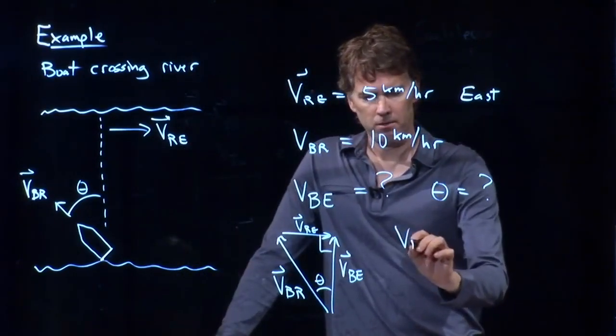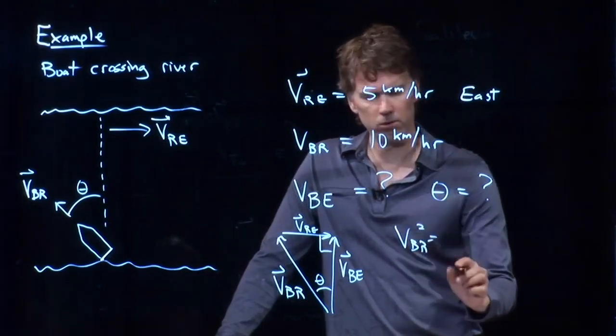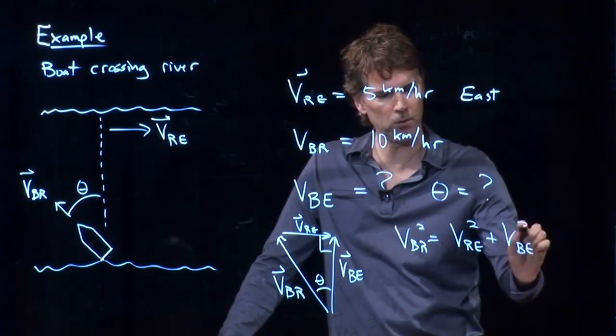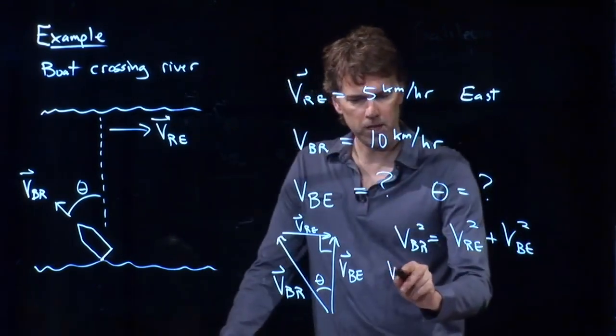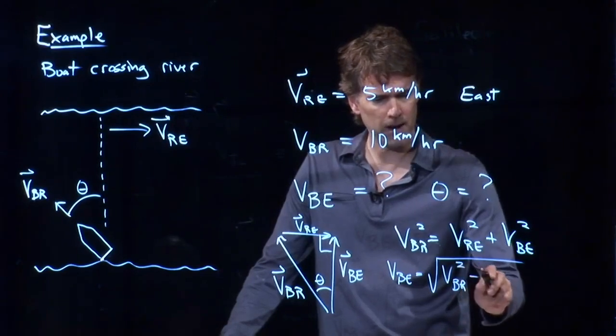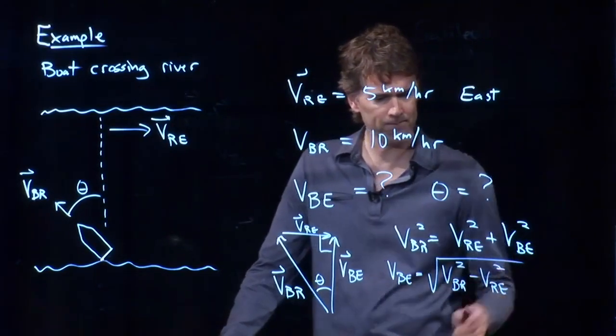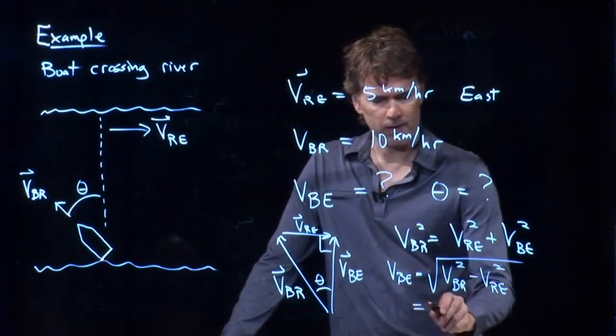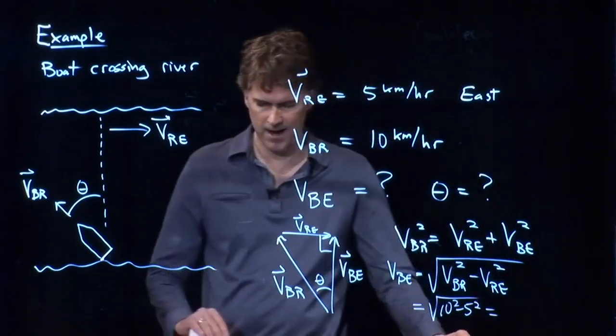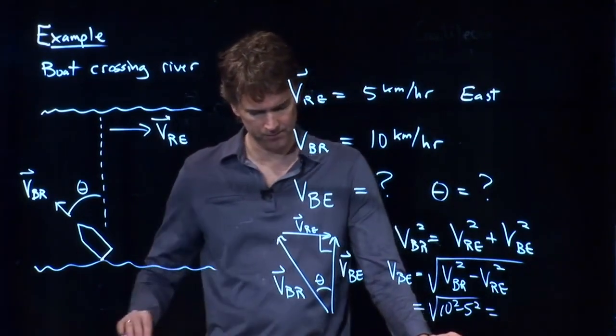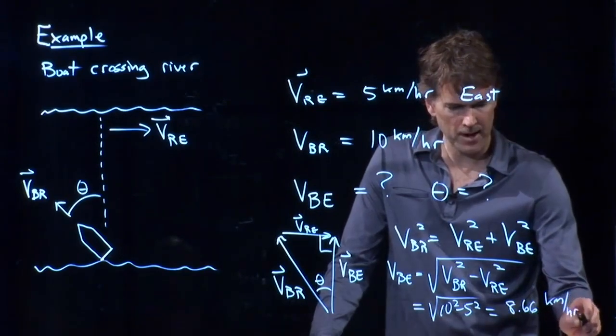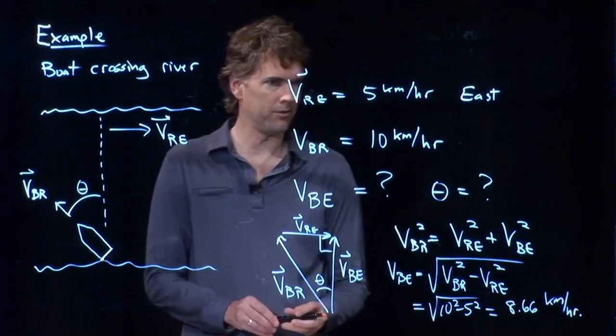We can solve this through VBE. VBR squared equals VRE squared plus VBE squared. And now we can solve this for VBE. VBE equals square root of VBR squared minus VRE squared. And we know all those numbers, right? We've got 10 squared. We're going to subtract 5 squared. That's the square root of 75. And we did this earlier. Square root of 75 was 8.66 kilometers per hour. So that's the first part.